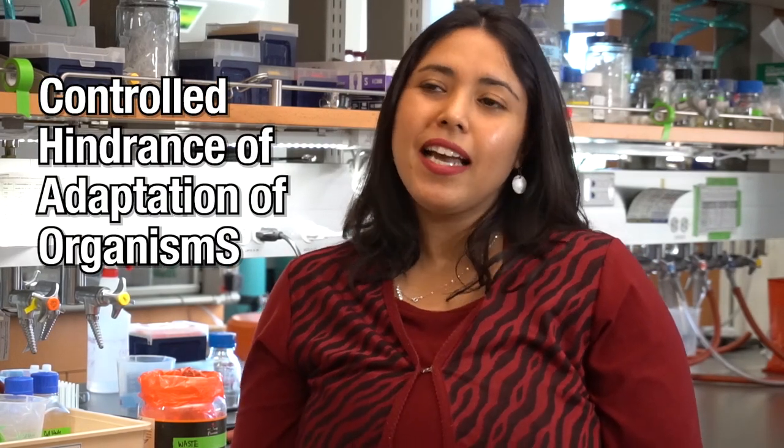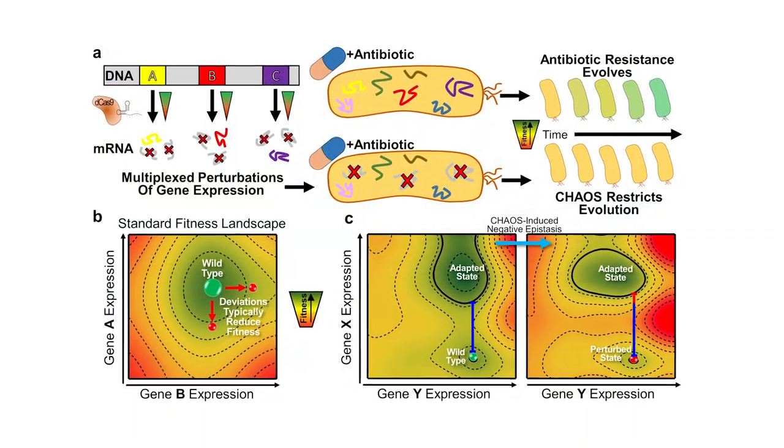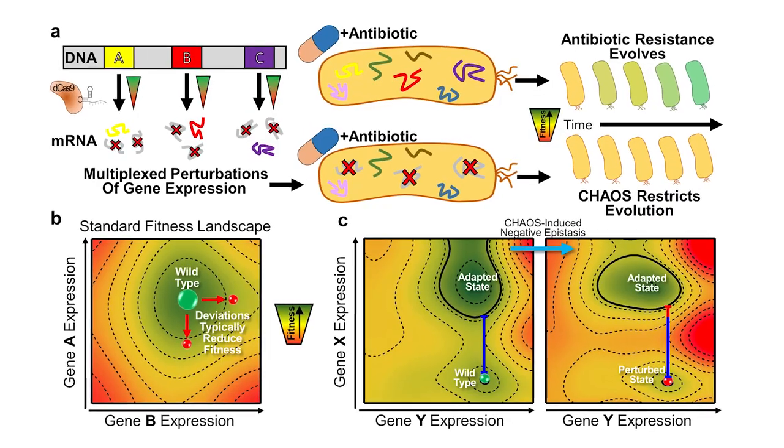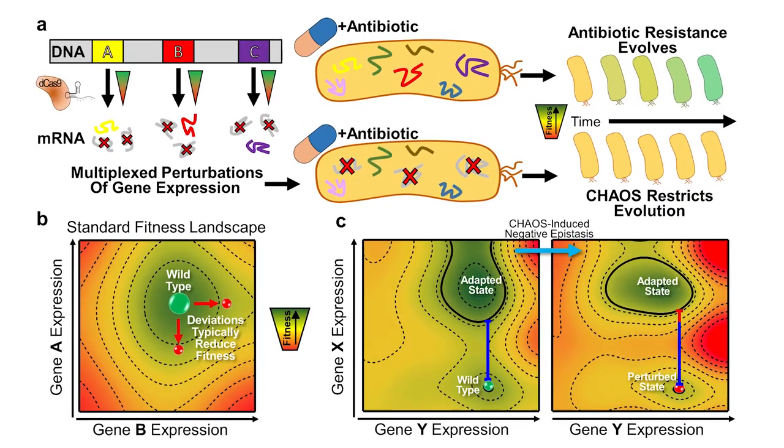Our third platform is called CHAOS, which stands for Controlled Hindrance of Adaptation of Organisms. The idea is very simple: we want to create chaos within bacteria. In this particular approach, we went back to the basics to understand how organisms evolve, learned from that, and then created a synthetic biology approach where we perturb genes within the bacteria to essentially create chaos.